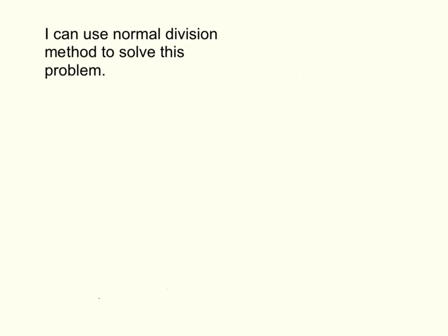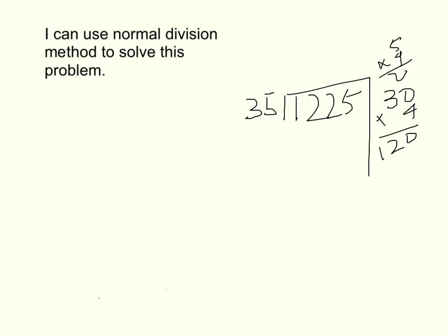I can use normal division method to solve this problem. So 1225 divided by 35. I know that 30 multiplied by 4 is 120, but 5 multiplied by 4 is 20, and it's not working because this is 1225.